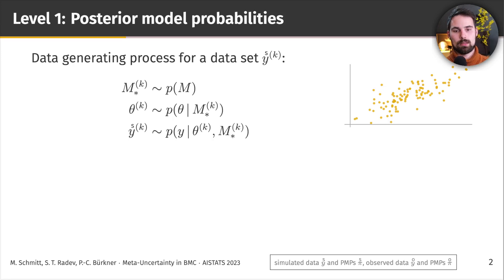Then we're going to take a draw, a sample from the prior distribution of the parameters of this model. We get theta. And then we can finally plug in theta and the model index into the likelihood function of this model, M*, and we can finally generate this data set y.